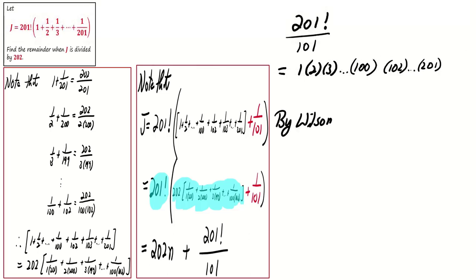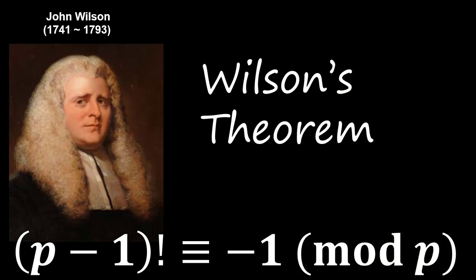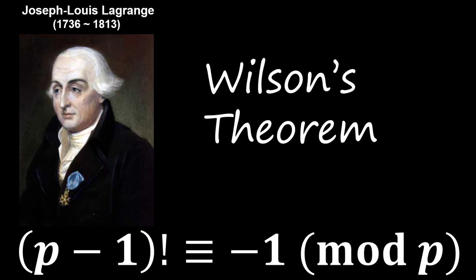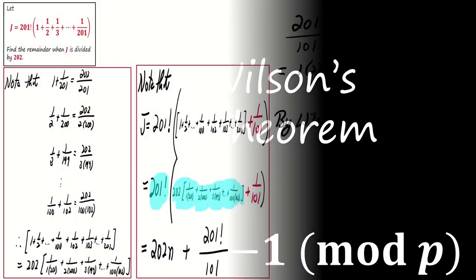Recall Wilson's theorem. We state that p minus 1 factorial is congruent to negative 1 mod p, where p is a prime number. While this theorem is named after John Wilson, a notable mathematician and judge, it is interesting to note that he did not provide any proof of this result. Lagrange gave the first proof in 1771.